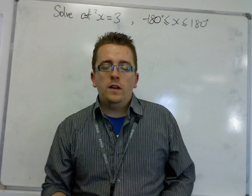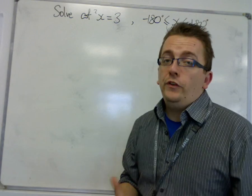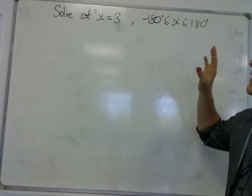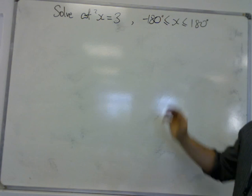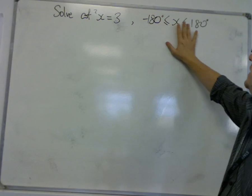We're looking at another trig equation here, and this time we are solving cot squared x is equal to 3, and we're going to be solving it between minus 180 and 180.